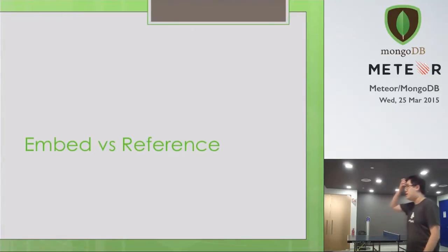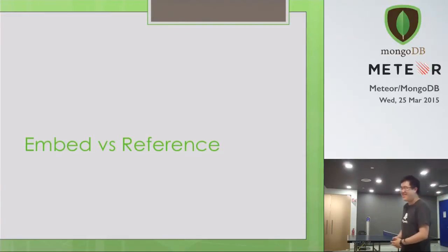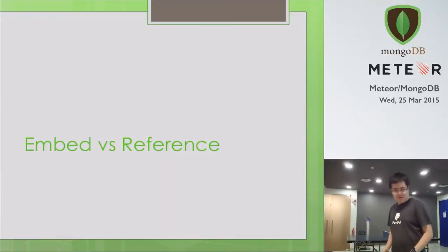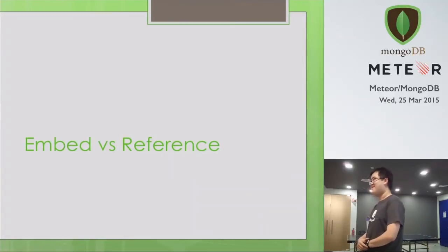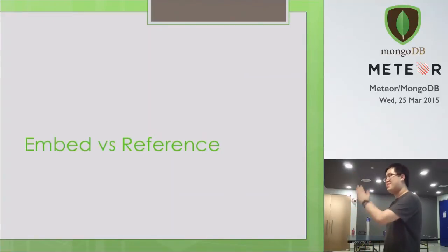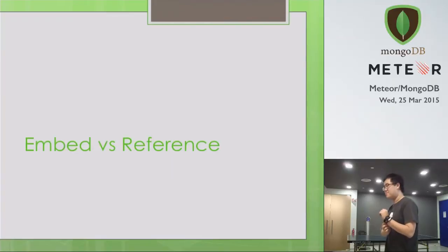Embedding versus referencing — how many of you are familiar with this terminology? Embedding is keeping it in the same document, referencing is keeping it in a separate collection. I've actually worked at a startup — I'm not going to name them — that actually had references everywhere. They used MongoDB like an RDBMS and had thousands of references per page load. It took 30 seconds to load a single page because they had so much processing to handle all the references, since MongoDB doesn't have foreign keys. So if you do references, it's quite expensive. Be aware of when you use it.